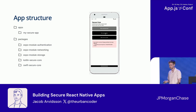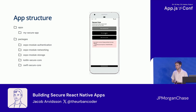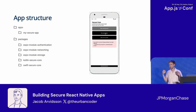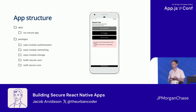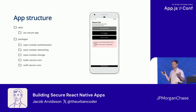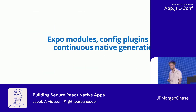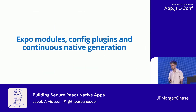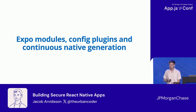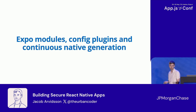This is usually when we turn to brownfield apps, because you have a better way of customizing your app logic when you're writing the whole app on the native side. But we want to do this with Expo — and this is where Expo modules and config plugins come into play.